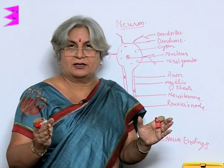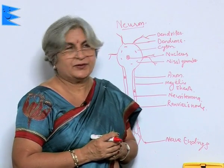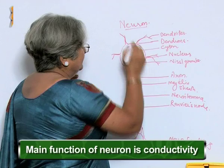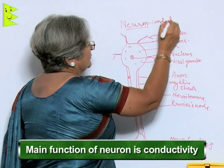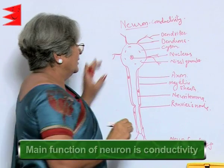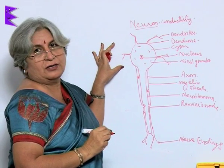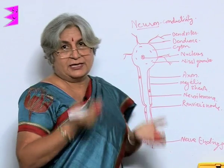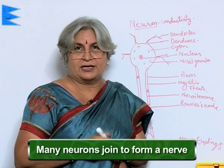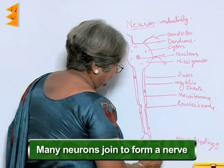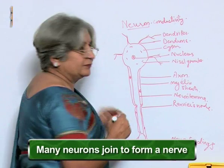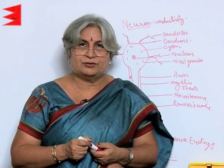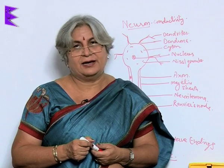A neuron can be very long — it can be even as long as one meter. The main function of the neuron is conductivity. It is through this peculiar structure of the neuron that it is able to pick up messages and also pass them across. Since the body is much longer, many neurons together join to form a nerve. So these are the four types of animal tissue: epithelial tissue, connective tissue, muscular tissue, and nervous tissue.